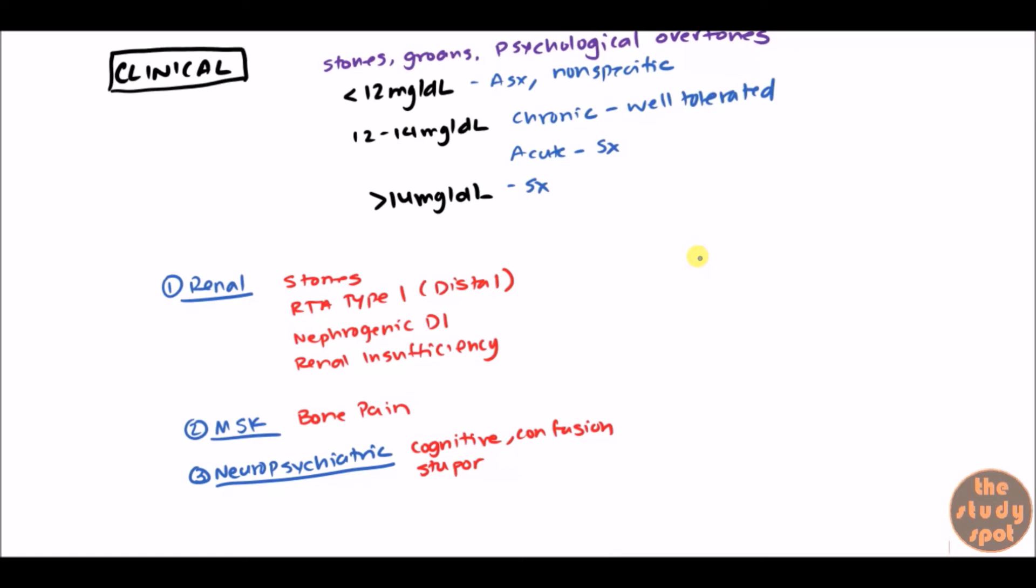Besides stones, groans, and psychological overtones, there's a few other things you want to keep in mind. There are some GIT symptoms. So constipation. And sometimes, the groan does stand for abdominal pain secondary to constipation. Anorexia. Pancreatitis. Hypercalcemia is a cause of pancreatitis. And peptic ulcer. And people aren't sure why that's the case, but it does seem to be related to having peptic ulcer.